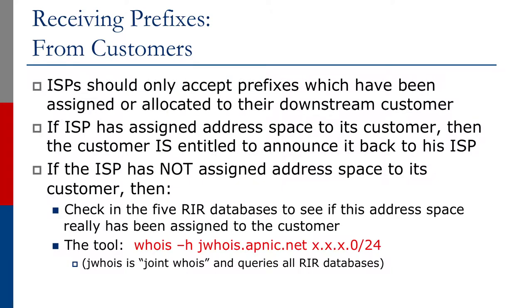We are now going to talk about receiving prefixes from customers. ISPs should only accept prefixes which have been assigned or allocated to their downstream customer. If an ISP has assigned address space to its customer, then the customer is entitled to announce it back to their ISP. If the ISP has not assigned address space to its customer, then it must check in the five RIR databases to see if this address space has really been assigned to the customer using the WHOIS tool.